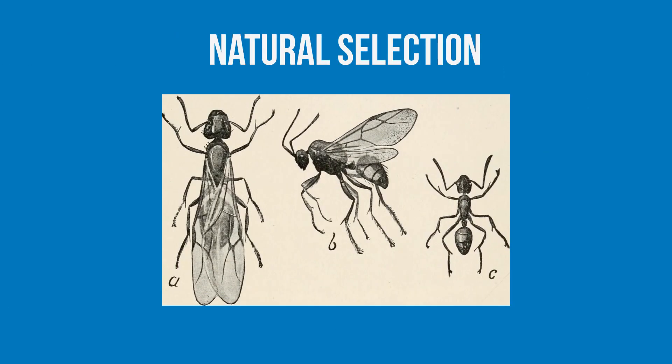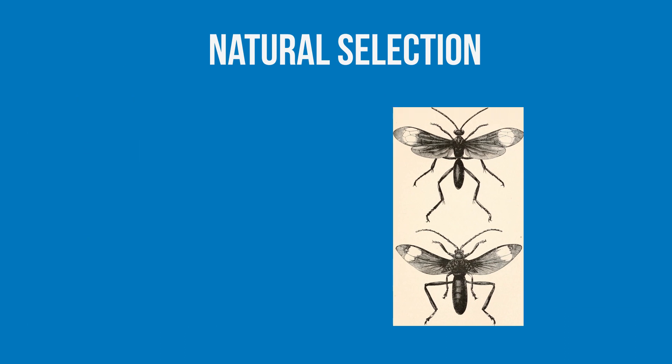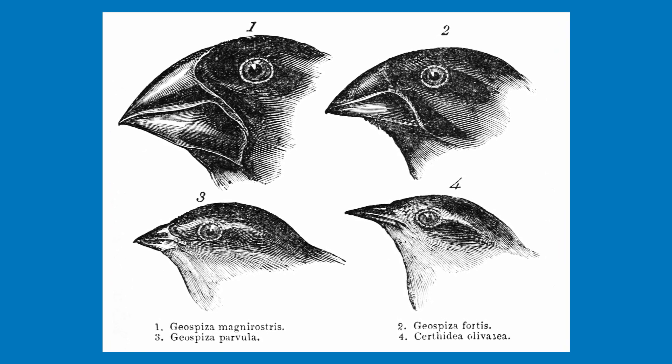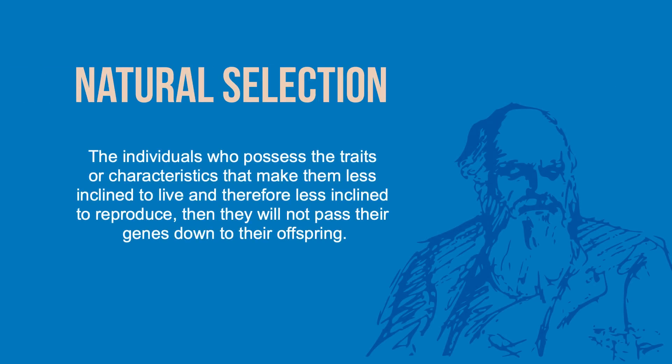So, if natural selection is Darwin's contribution to the theory of evolution, what is it exactly? Within a species, certain individuals will display different physical characteristics or phenotypes. These differences are due to variations within their genes. This theory of natural selection would say that because some of these characteristics make certain individuals more prone to thrive or survive within their specific environment, those individuals are also more likely to procreate and pass along their genes to their offspring. On the other side of that, individuals who possess traits that make them less inclined to live, and therefore less inclined to reproduce, will not pass their genes down to their offspring.